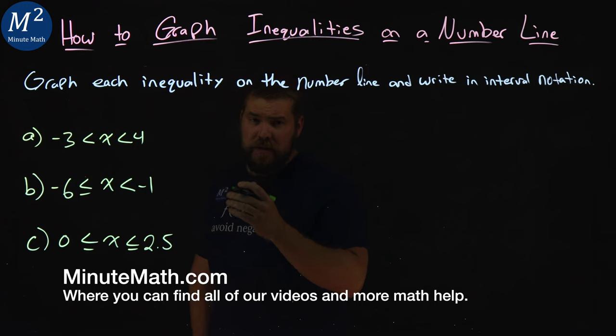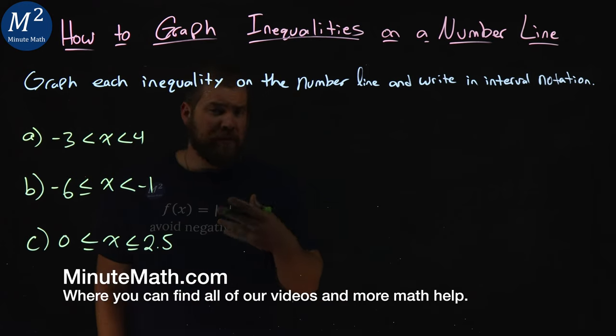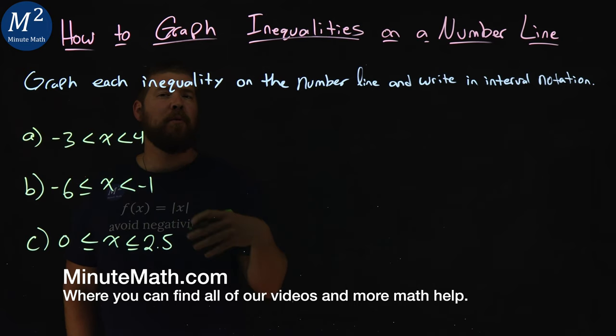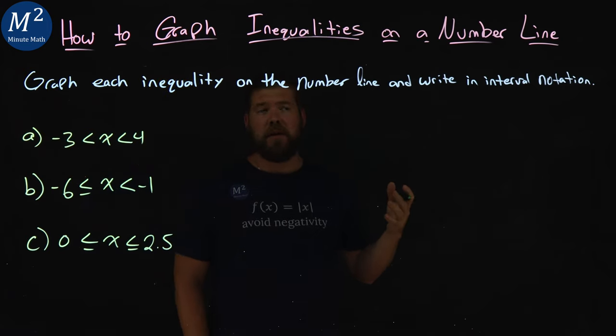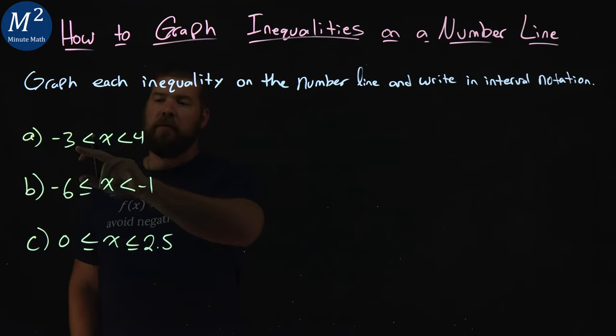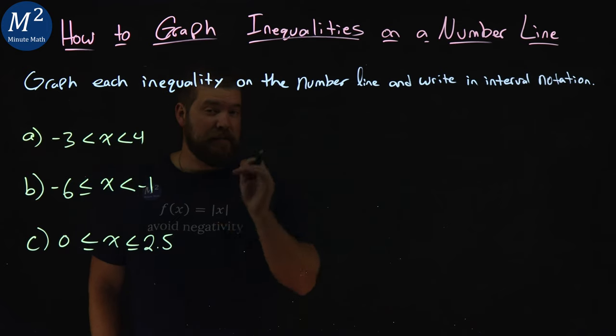We have three examples here, and they're a little different than our previous examples. Notice we have a lower and upper bound written here for each one of these examples.